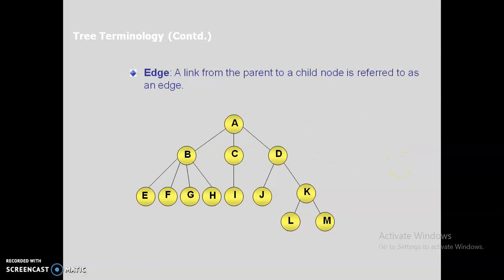A link from the parent to a child node is referred to as an edge. When implementing using a linked list there may be confusion with the term 'link', so we call it an edge. An edge connects two nodes in the tree.